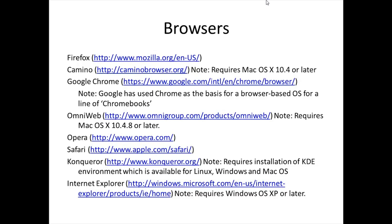Microsoft's Internet Explorer, or IE, in 1995 was originally purchased from Spyglass Incorporated. IE is different from most other browsers due to the way it was tightly implemented within the Windows operating system, requiring the use of IE to control network connections. This led to several legal disputes resulting in more openness regarding which browsers can and should be used. A wide variety of browsers are available across several platforms, many of which have been listed on the slide.